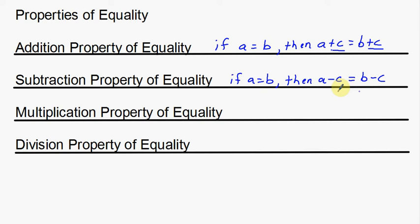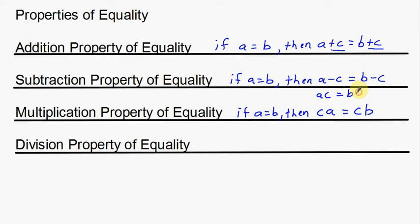Again, something that you've seen when solving equations. For the multiplication property, you can well imagine that we're going to multiply. If A is equal to B, then if I multiply something on both sides, C times A is equal to C times B. Notice I put C out front — it doesn't matter if C is out front or behind; AC equals BC also works. Either way, it doesn't matter. But if you multiply something on one side of the equation, you must multiply it on the other side.